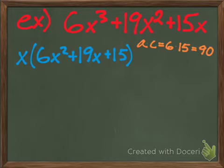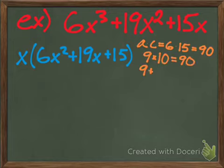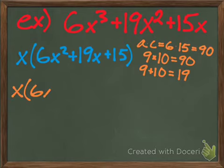So when you multiply 6 times 15 you get 90, and you have to ask yourself the question: what factors of 90 can add or subtract to make... whoops, pause that back that up.